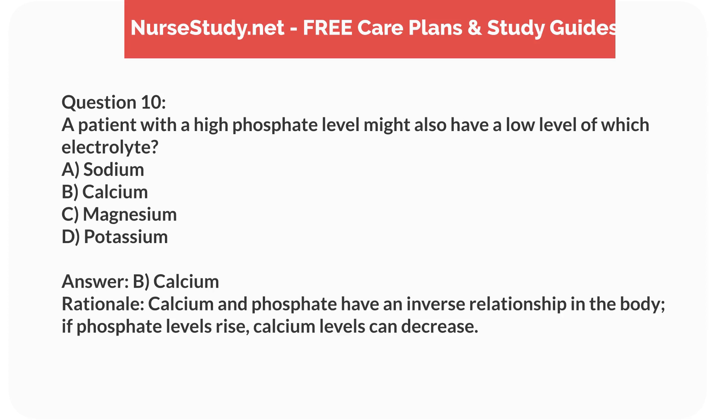Answer: B. Calcium. Rationale: Calcium and phosphate have an inverse relationship in the body; if phosphate levels rise, calcium levels can decrease.